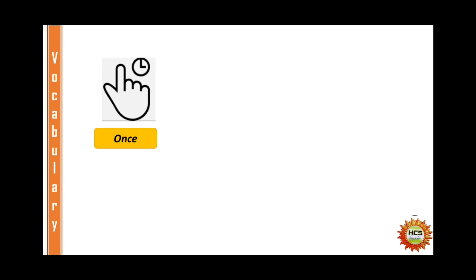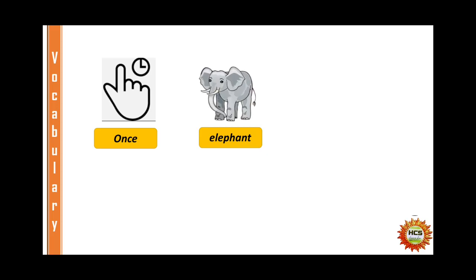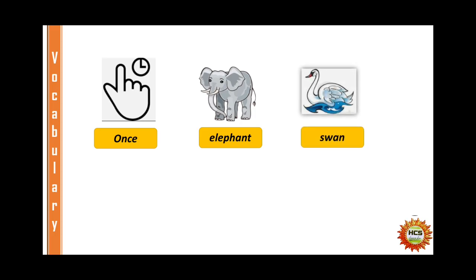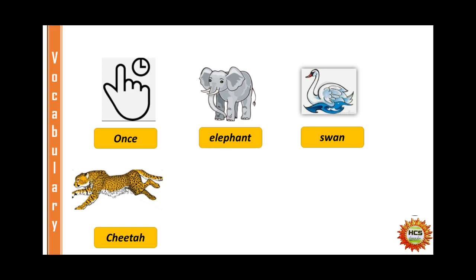The first word is 'once.' Once means at one time. Next word is 'elephant.' Elephant is not a difficult word — you have already seen an elephant. This is an elephant. Next word is 'swan.' This is a swan. Next word is 'cheetah,' spelled C-H-E-E-T-A-H.